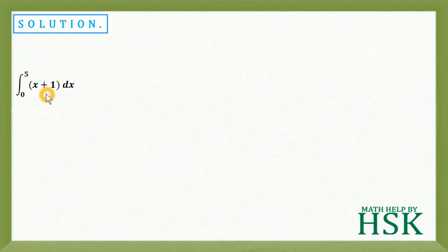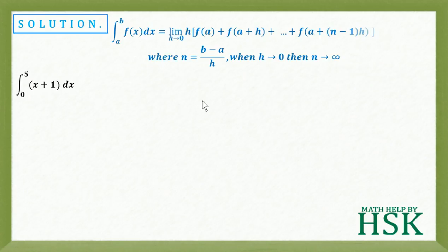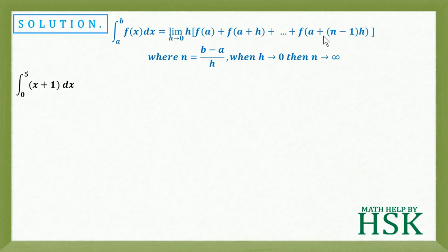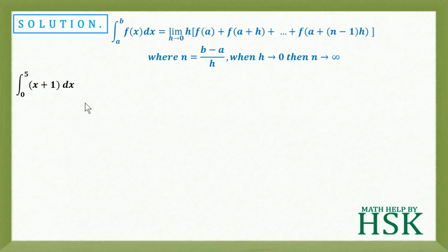To solve this definite integral using the limit of sum, we apply the formula: ∫f(x)dx from a to b equals the limit as h tends to 0 of h times [f(a) + f(a+h) + ... + f(a+(n−1)h)], where n = (b−a)/h and when h tends to 0, n tends to infinity.